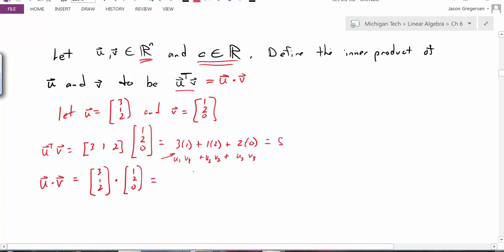So we can really think about the dot product as taking this product, 3 times 1, plus this product, 1 times 2, plus 2 times 0, of course to get 5. So there are two different ways to think about this dot product.